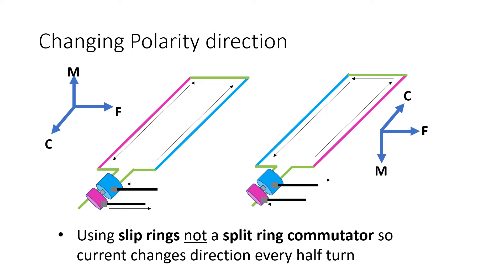Using your left hand rule: the magnetic field lines were going from left to right, north to south. The movement on that particular part of the coil was going upwards, so your thumb should be pointing upwards, which means your second finger should be pointing towards you — which is the direction of current along the pink. That means the current will travel along the pink, down the long arm of the coil, and out the pink slip ring.